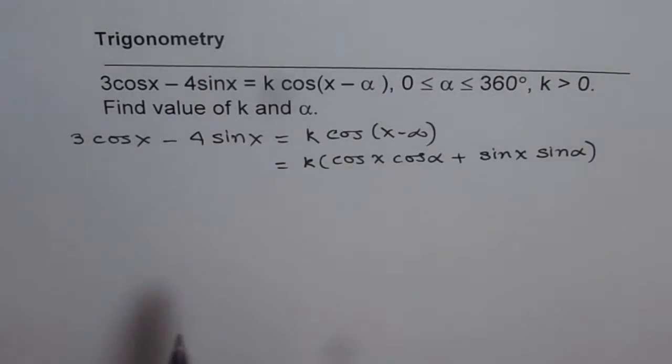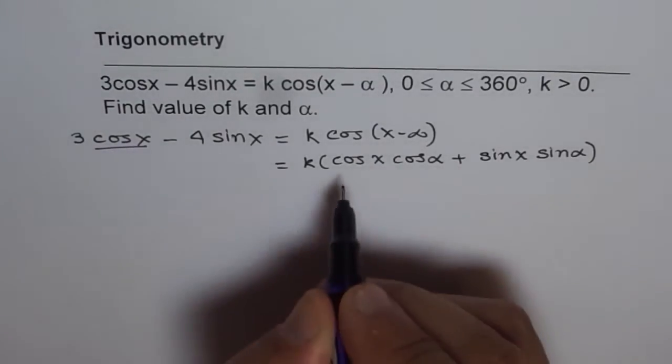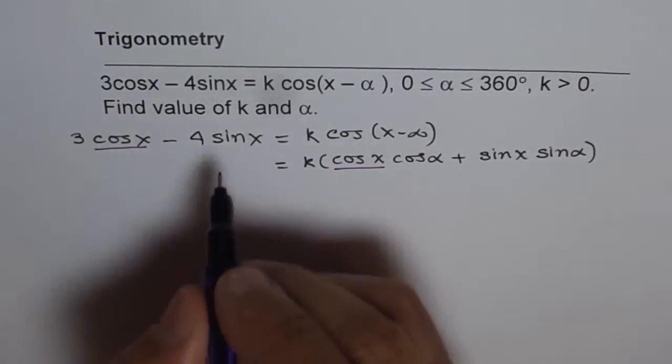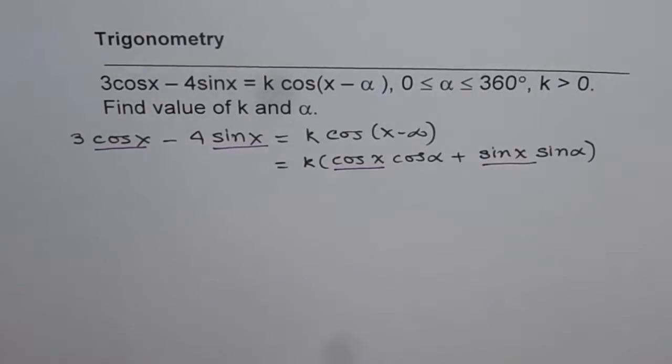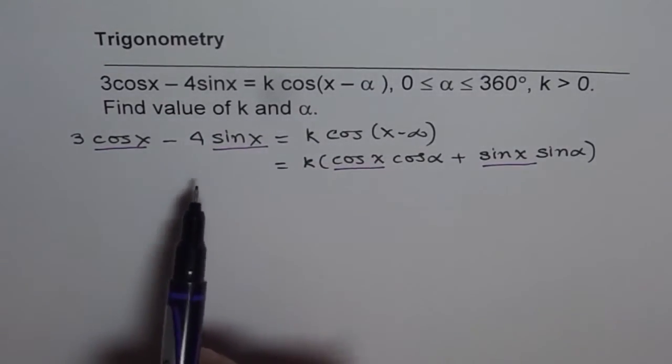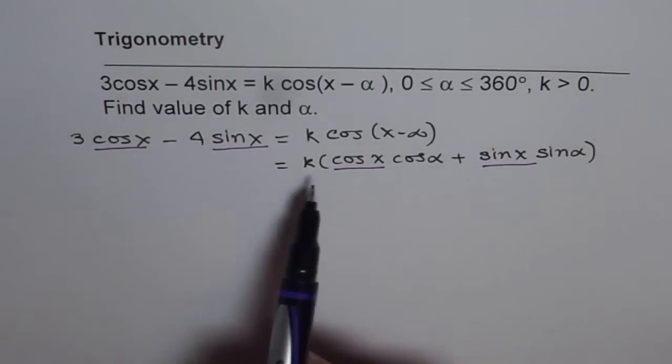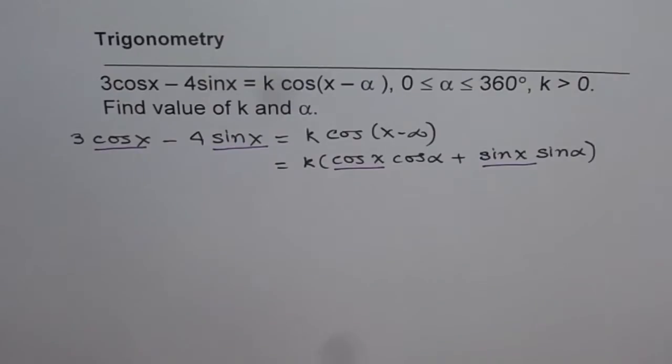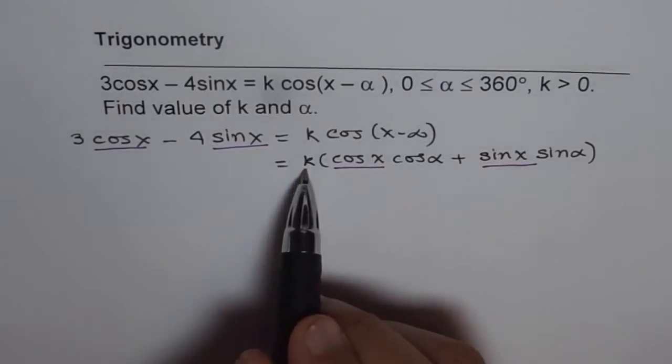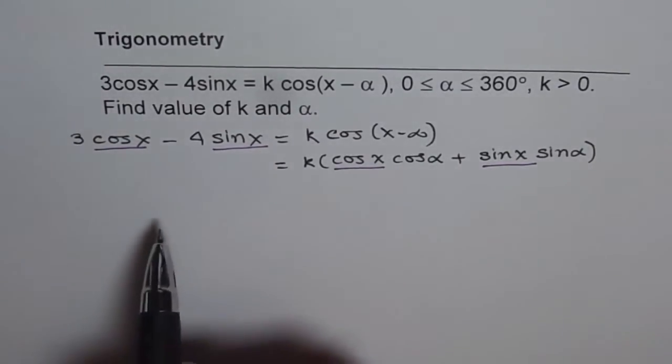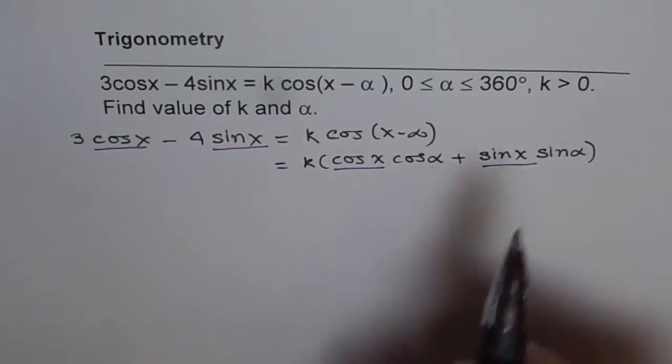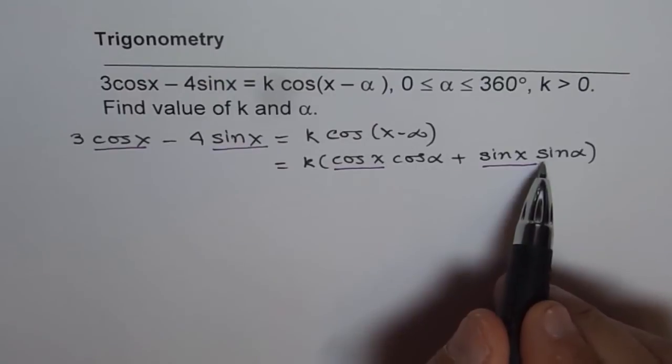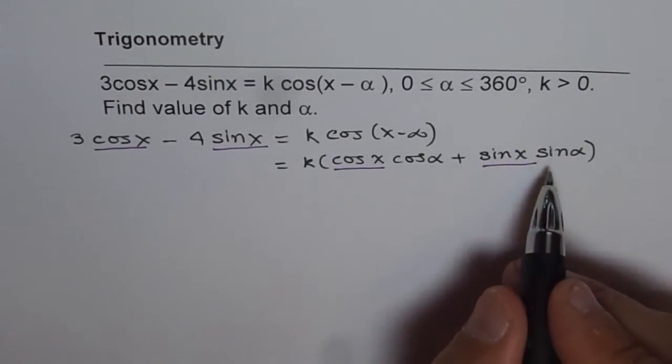Now if you compare left side and the right side, what you notice is that we do have cos x terms in both, and sine x and sine x. Now if you compare, then what we can say is that if these two equations are equal, that means we can write 3 as equals to k times cos alpha. And we can write minus 4 as k times sin alpha. So that is what we are going to do now.